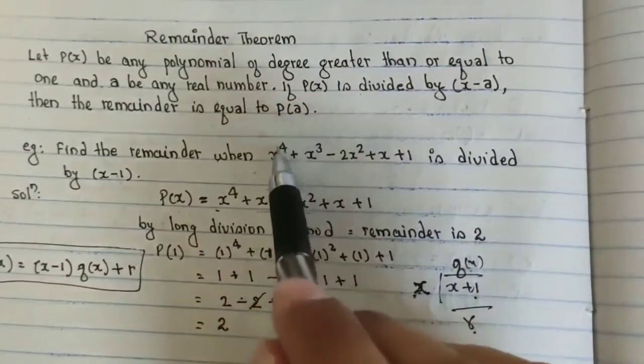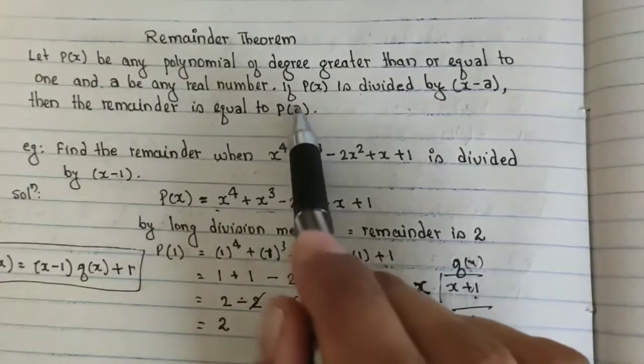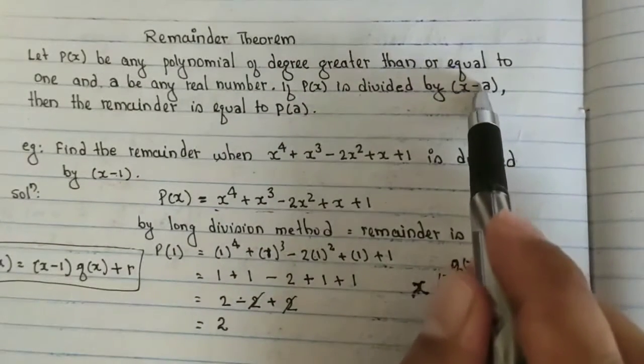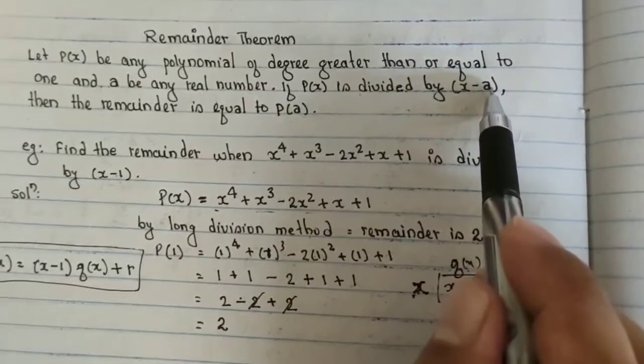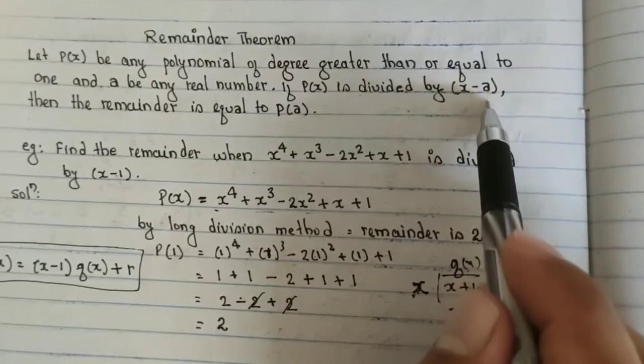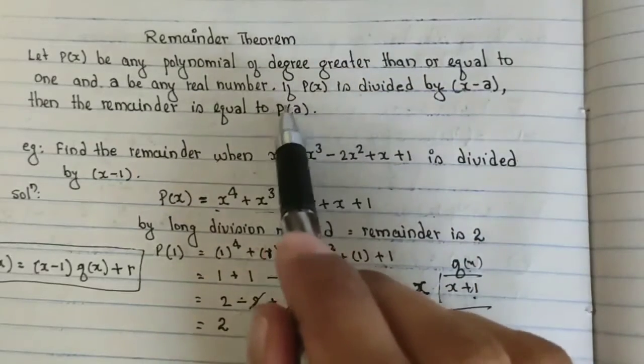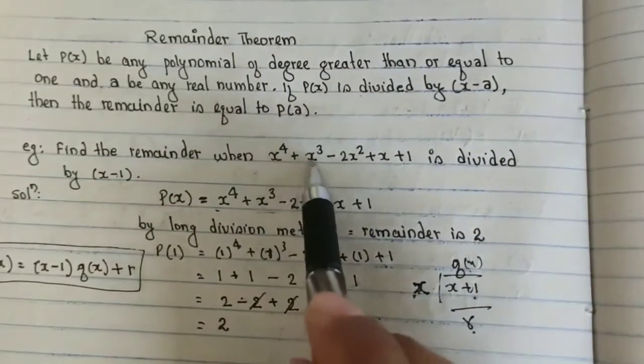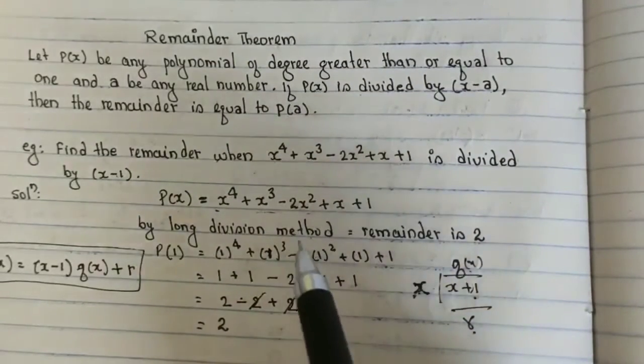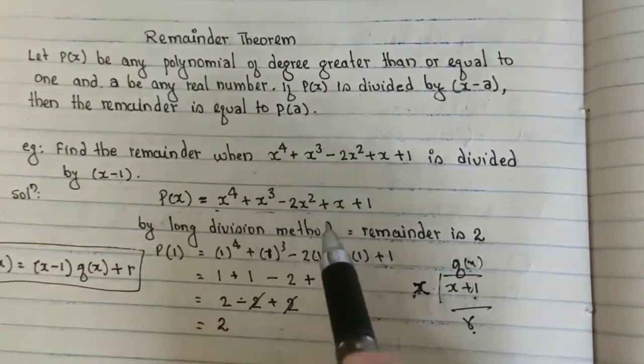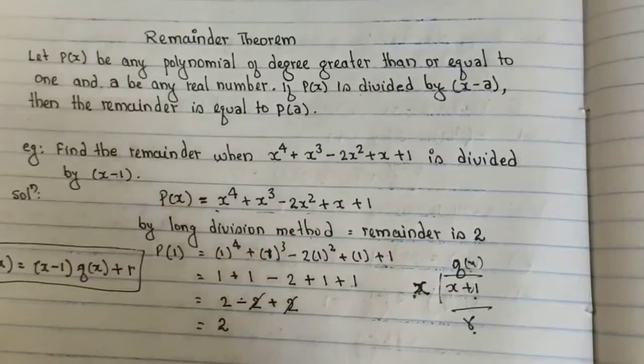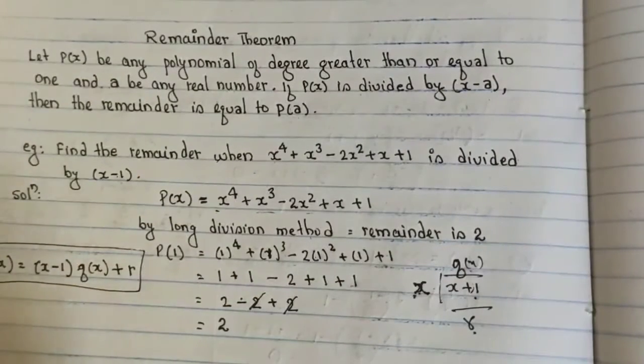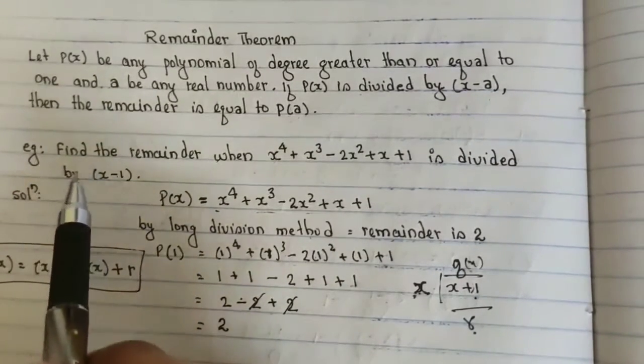This means if you substitute your x by a, here a is this constant. If suppose in place of this a it is 1, when you place P(1), in place of x, the remainder that you will get, that will be your P(a). I will try to explain you with the help of this example.